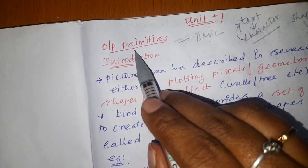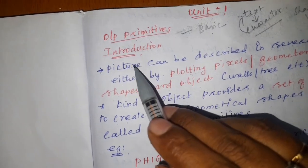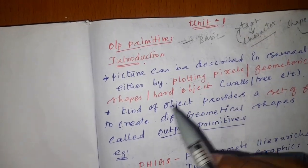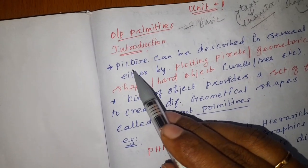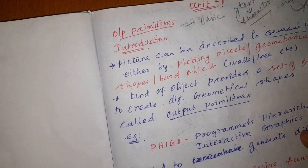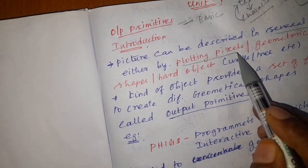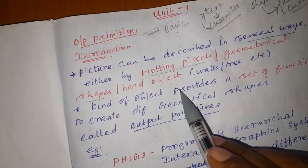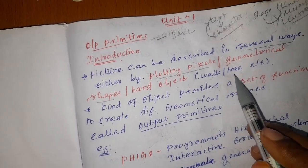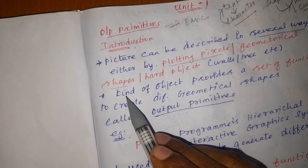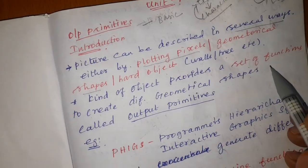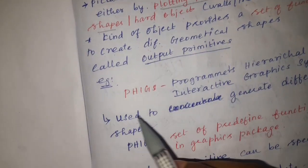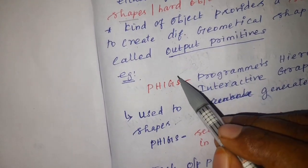An output primitive is many basic elements used together to produce an object. A picture can be described in several ways: by plotting a pixel in a graph, by geometrical shape, or as a hard object such as a tree. The output primitive is a set of functions used to create different geometrical shapes.